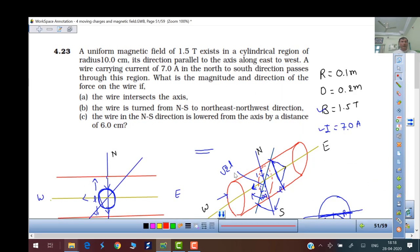Then 23rd. A uniform magnetic field of 1.5 Tesla exists in a cylindrical region of radius 10 centimeters. I have drawn this cylinder. Its direction is parallel to the axis along the east-west direction. So it exists in the east-west direction. A wire carrying current of 7 amperes flows from north to south.